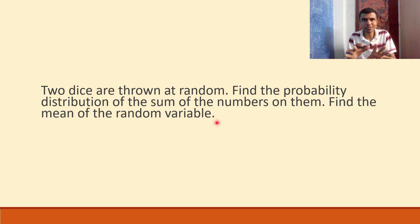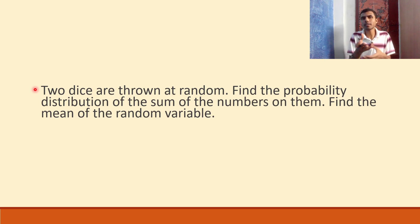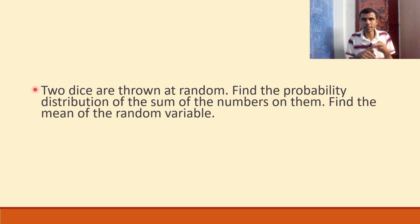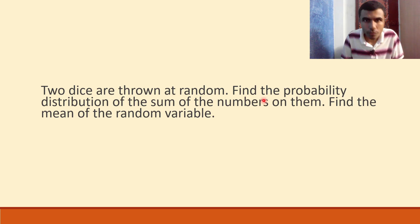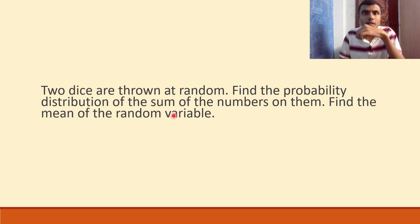Let us first understand the question a little instead of just going to the solution directly. Basically, two dice are thrown. You know a die has one to six. So we have two dice. They are telling us to find the probability distribution of the sum of the numbers.